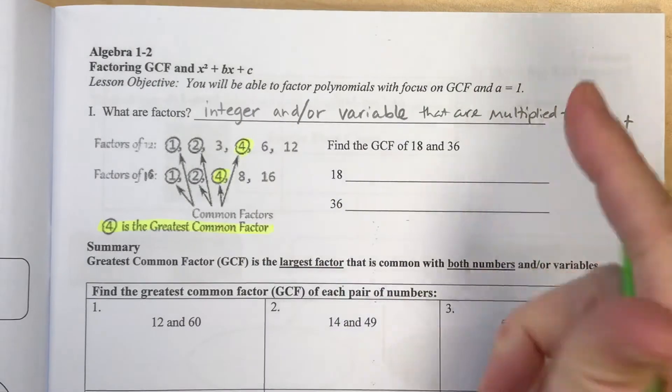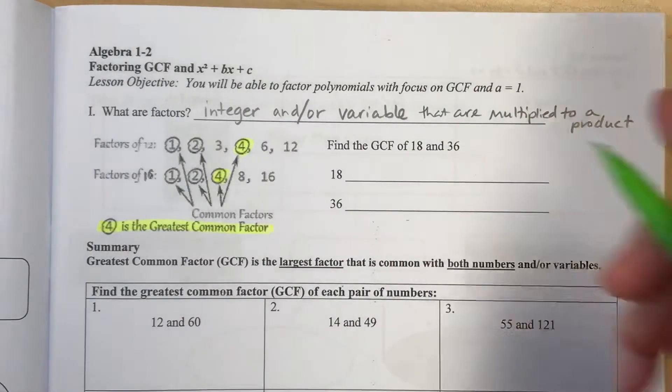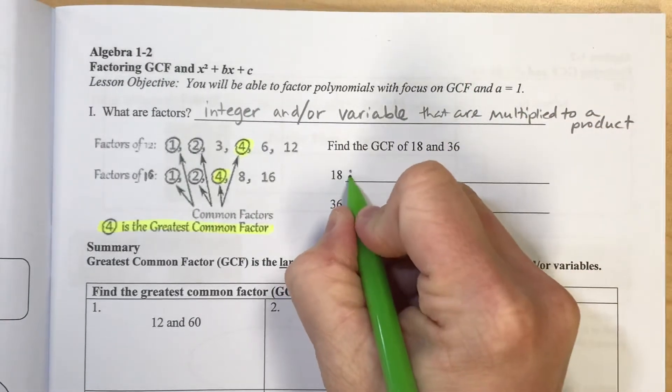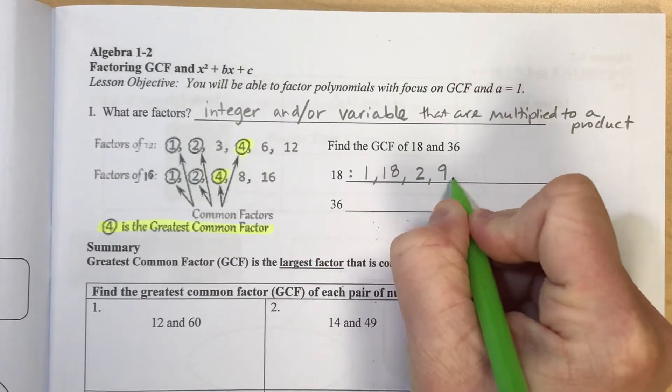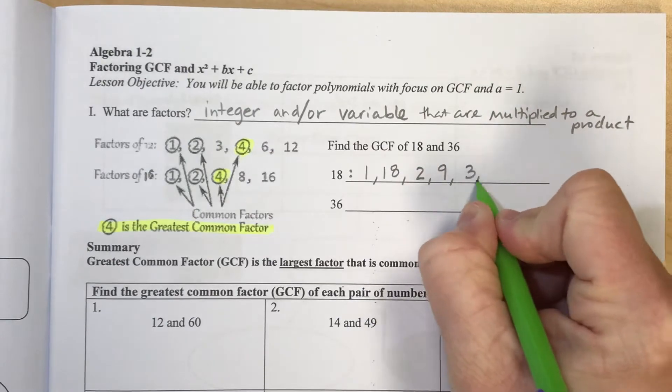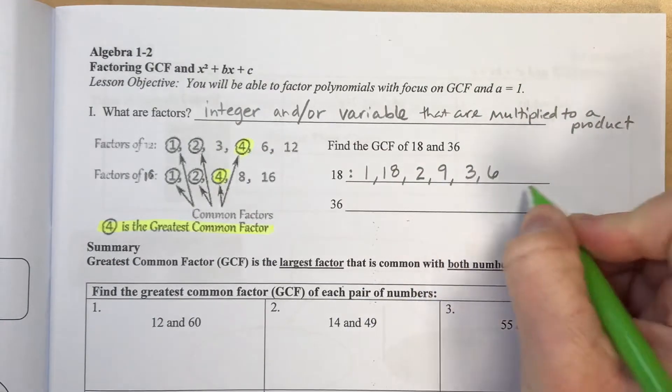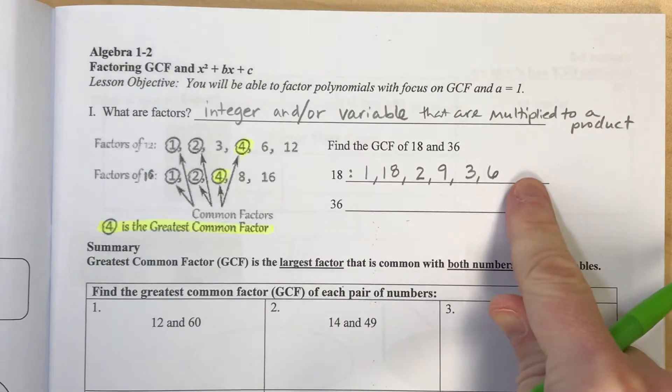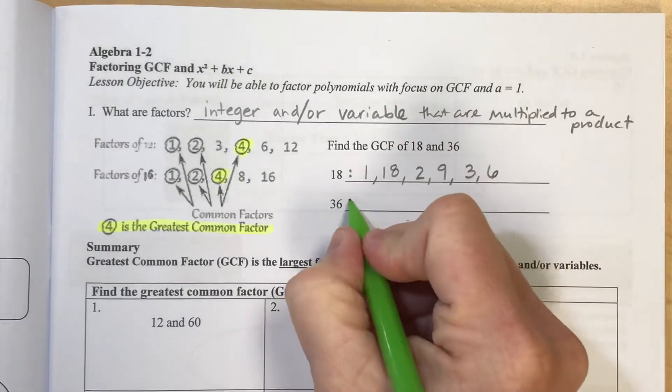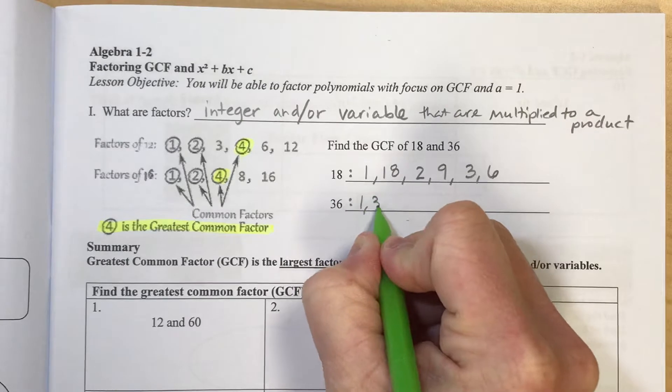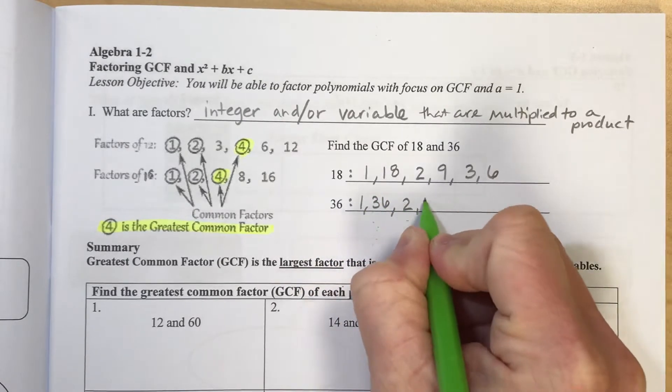And now, I'm not going to write mine in order. I'm just going to write them in terms of what I remember that what multiplies to be 18. 1 times 18 is 18, 2 times 9 is 18, 3 times 6 is 18. And I think those are all the numbers that multiply to make 18. Now I'm going to do the same thing and make a list for the numbers that multiply to make 36. 1 and 36, 2 and 18.